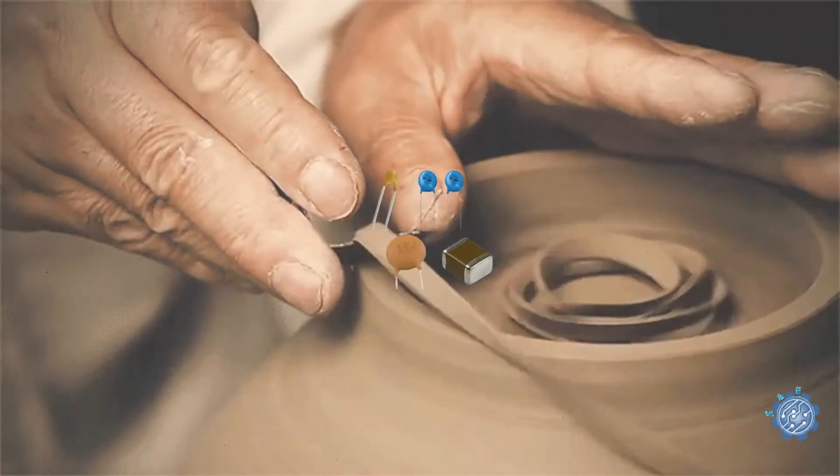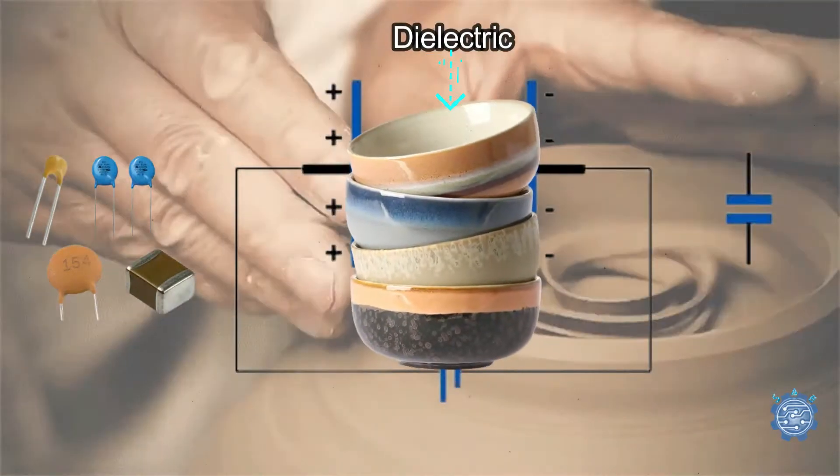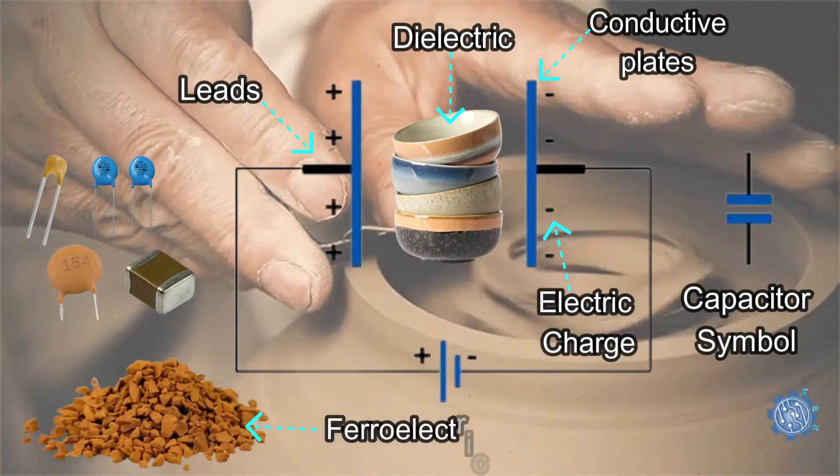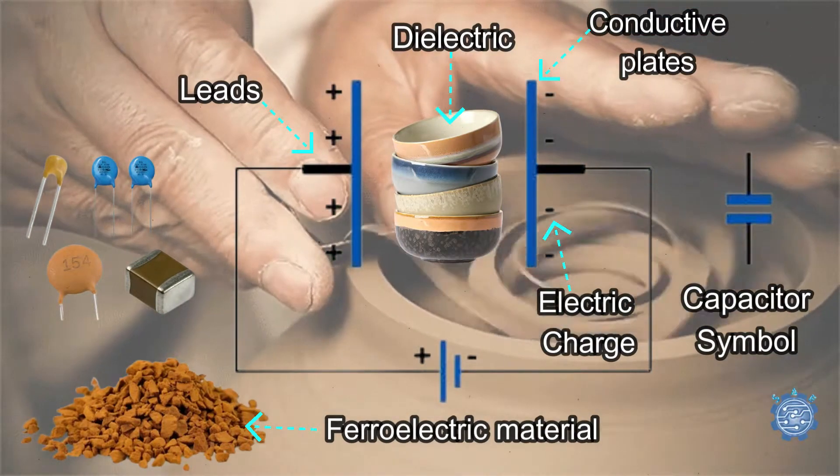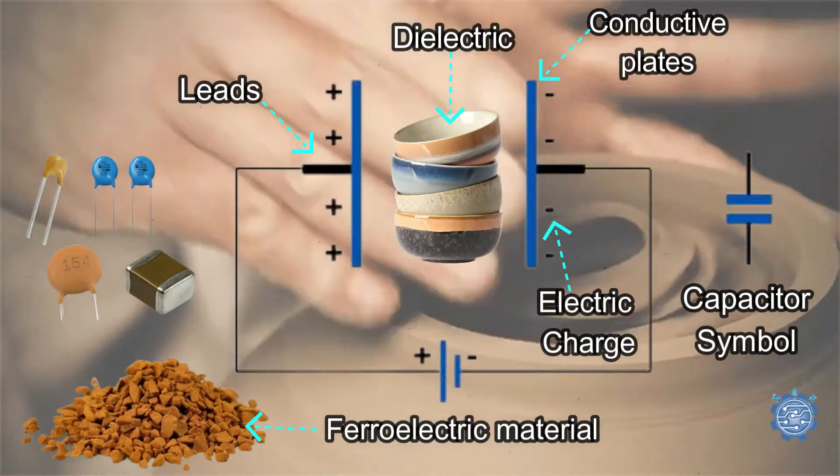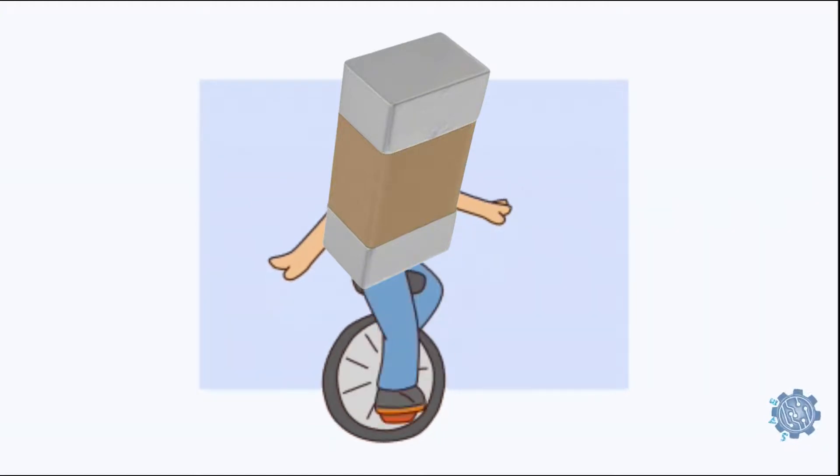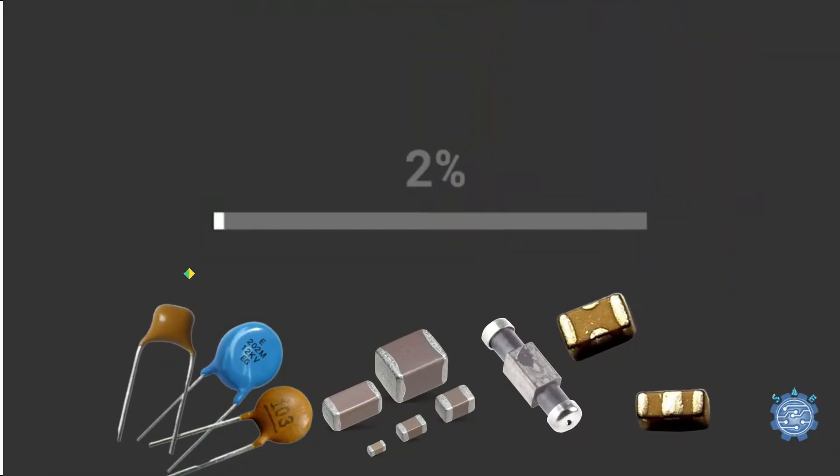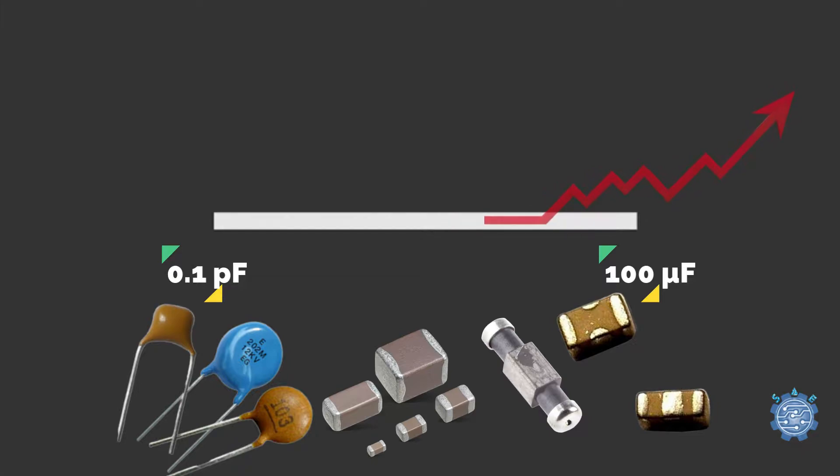Ceramic capacitors have the dielectric made from a ceramic material, more exactly a combination of finely ground granules of paraelectric or ferroelectric materials mixed with other materials. They provide a good level of stability and have a low loss factor. The capacitance range is somewhere between 0.1 picofarads and 100 microfarads, and some with even higher values reaching 470 microfarads.